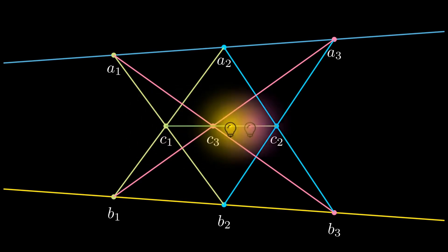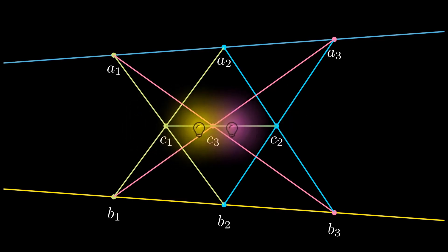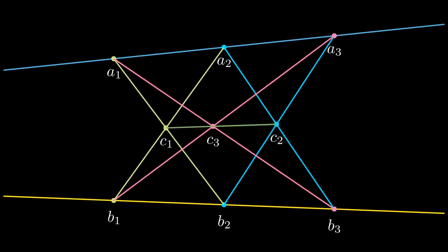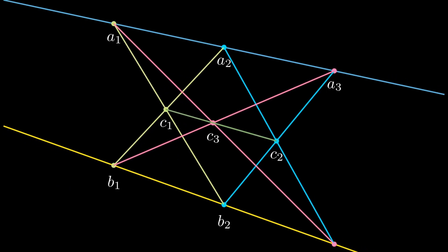Notice that c1, c2, c3—these three points—they are on the same straight line. This is interesting and intriguing because it does not depend on the position of a1, a2, a3, or how the blue line and the yellow line are tilted.